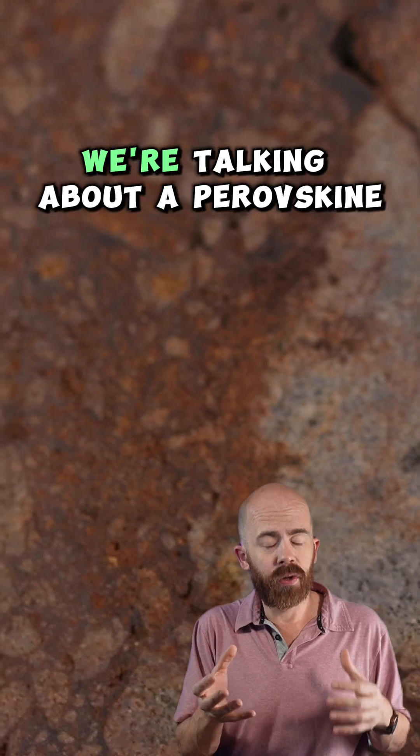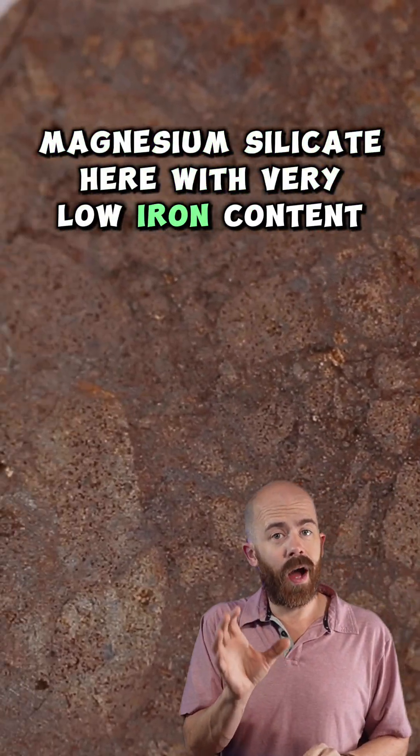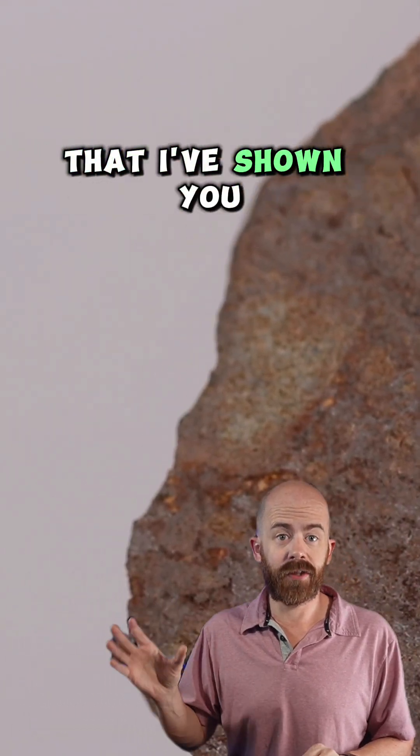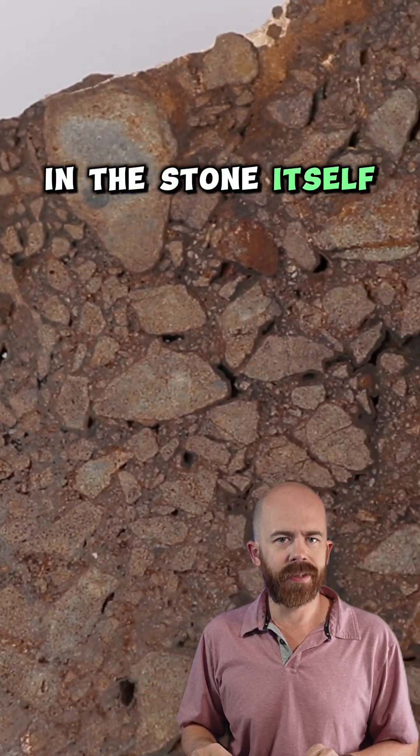Now when I say enstatite, we're talking about a pyroxene, magnesium silicate here, with very low iron content. So this meteorite has a lot less metal than many of the other meteorites that I've shown you, and even when looking at it here close up, it's hard to visually distinguish any free metal in the stone itself.